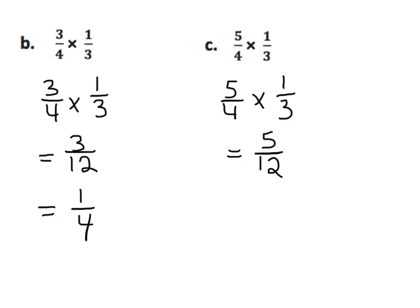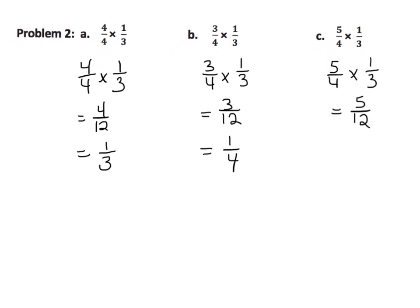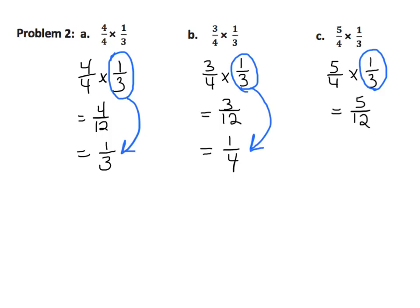In all three cases, we multiplied by 1 third. In the first case, it stayed the same — 1 third is still 1 third. In the second case, it got smaller. Teachers, a lot of students think that 1 fourth is bigger than 1 third — not true, so you'll need to remind them that 1 fourth is smaller than 1 third. And in the third case, it got bigger — 5 twelfths is bigger than 1 third.